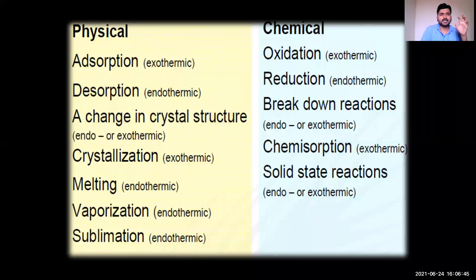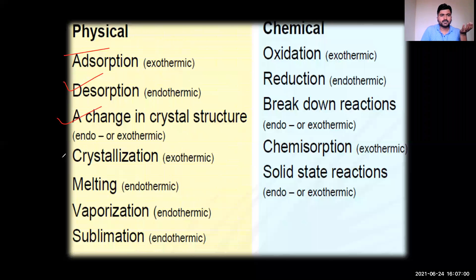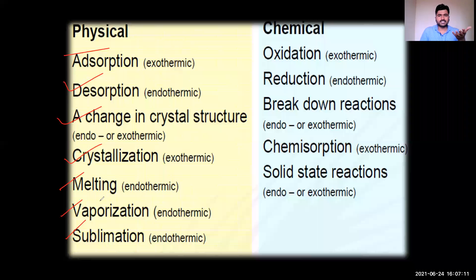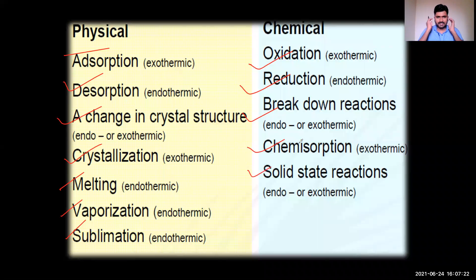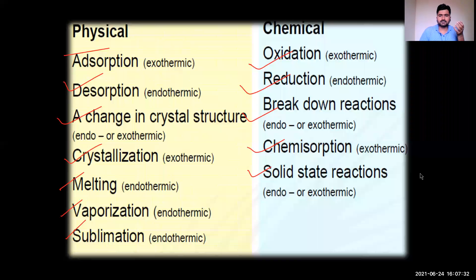When we heat the sample to increasing temperature, physical changes that occur include adsorption, desorption, changes in crystal structure such as crystallization, melting, vaporization, and sublimation — these are endothermic as well as exothermic changes. Chemical changes include oxidation, reduction, breakdown reactions, chemisorption, and solid-state reactions. I will not go into much further detail on these points.